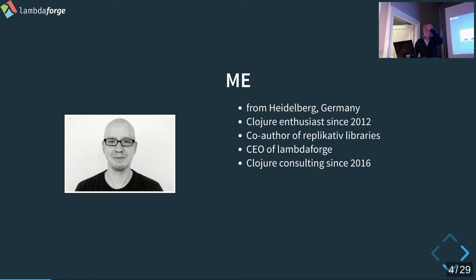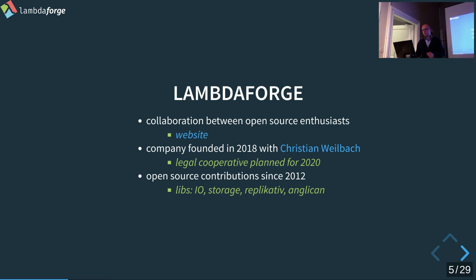About me: I am German, from Heidelberg — a beautiful city. I have been working with Clojure since 2012. I started at university writing research papers and really liked it. I worked with a good friend, Christian Wallbach. Together we developed open source libraries and founded a company last year. We created Clojure libraries for IO, storage, key-value store, and a replication system, though that wasn't really successful. Christian also worked on Anglican, a probabilistic programming language written in Clojure.